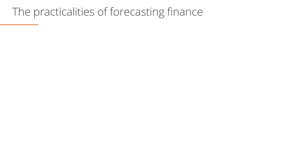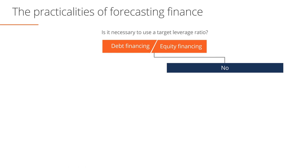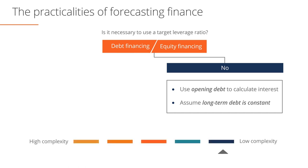There are many practical modeling issues that need to be considered when forecasting the finance structure. A useful question to ask at the start is whether you need to use a target leverage figure in your model — in other words, do you need to forecast debt levels as a multiple of equity? If the answer is no, consider using opening debt to calculate interest and assume that long-term debt is constant. This will keep your model simple and straightforward, and more importantly, it will minimize the chance of getting circular references. Our financial model case study uses this simple approach.